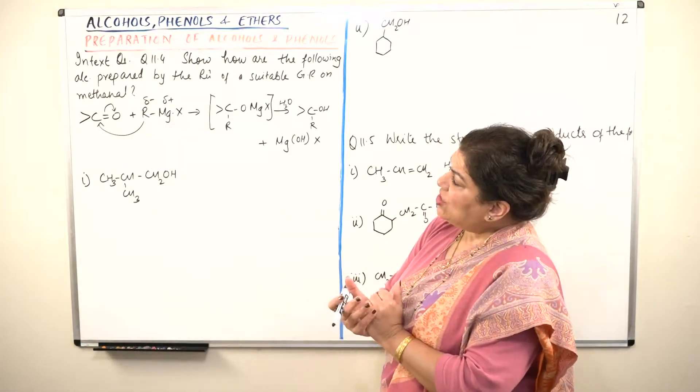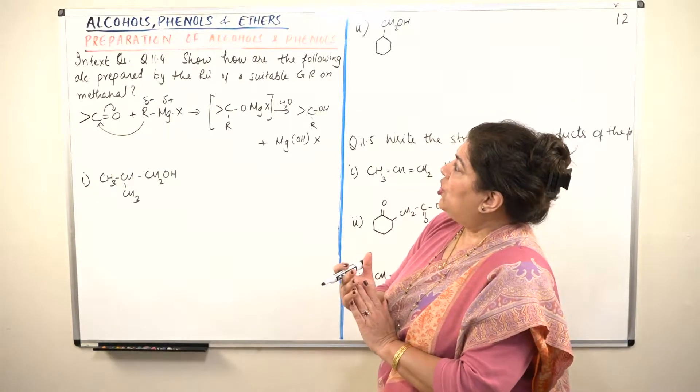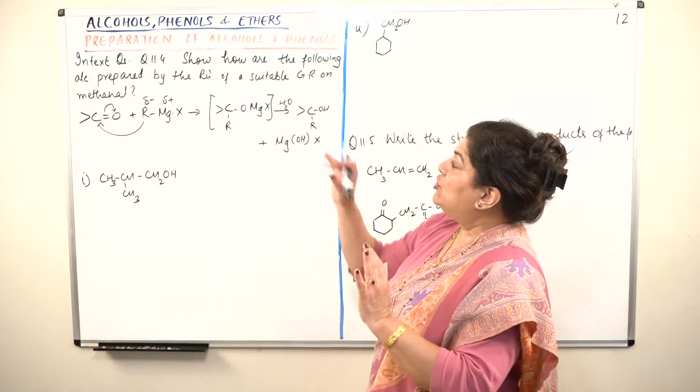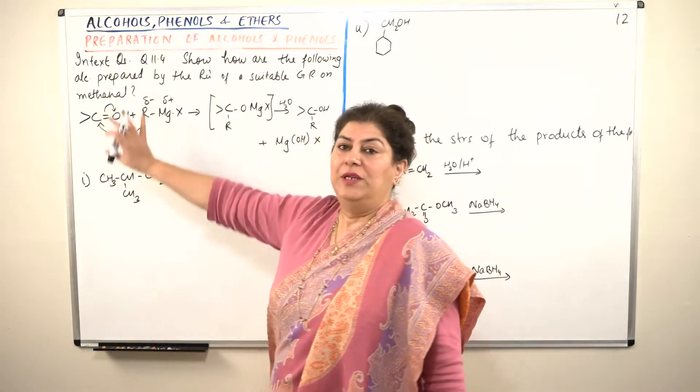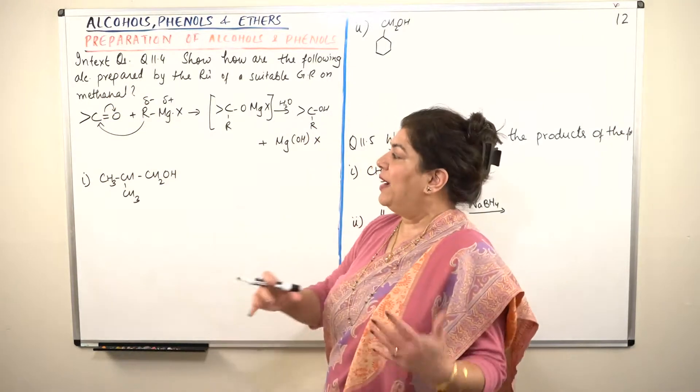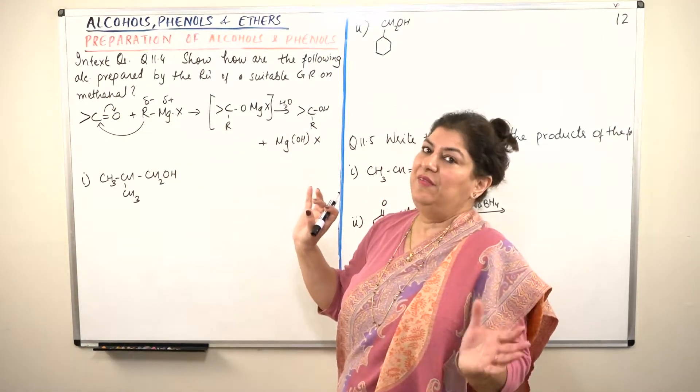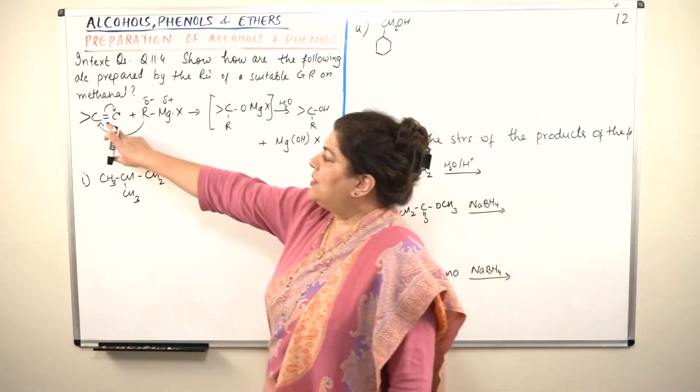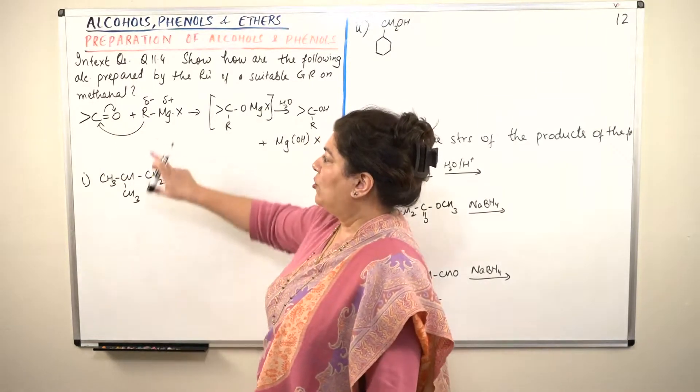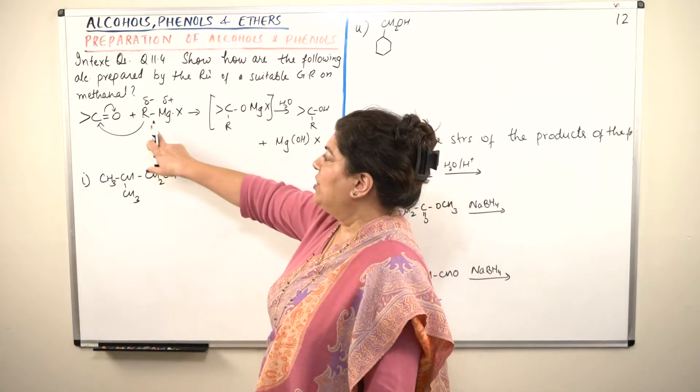So in this question it says show how are the following alcohols prepared by the reaction of a suitable Grignard reagent on methanal. Since I have given you only the carbonyl group, let us first revise what the reaction would be like and then we take it as methanal and solve our question. So this is the carbonyl group of the aldehyde or the ketone.